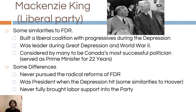King built a liberal coalition with the progressives, seeing those reform-minded people as assets to maintain party power. He was leader during both the Great Depression and World War II, and is sometimes considered Canada's most successful politician — 22 years in power. But he wasn't as radical as FDR. He built a coalition with progressives, but didn't enact all the reforms even his progressive partners wanted. He was in power when the Depression hit and never fully brought labor support into the party, whereas FDR actually had fair success in doing so.